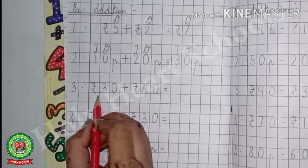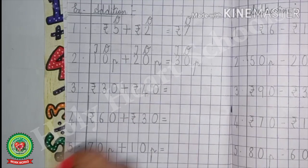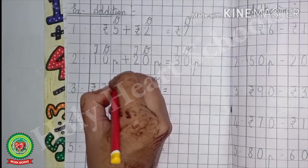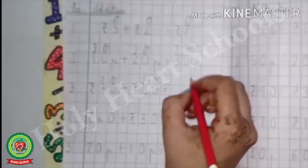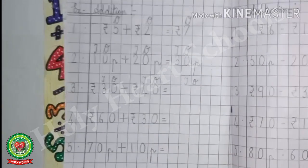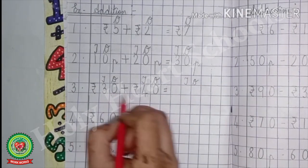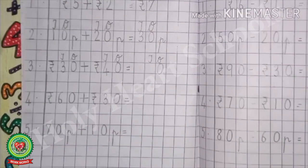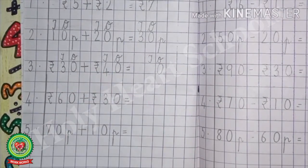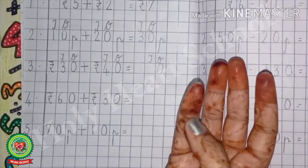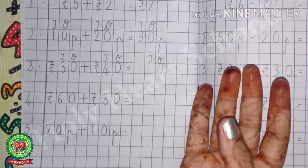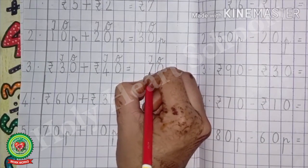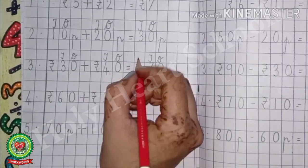Number 3: rupees 30 plus rupees 40. Again, first write the place value chart — 1s and 10s on each number, and 1s and 10s in the answer. Add 0 plus 0 — the answer is 0, write 0 under 1s. Then 3 plus 4: counting on from 3, we get 7 — write 7 under 10s. With that, write the unit, which is rupees.